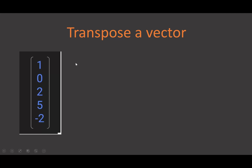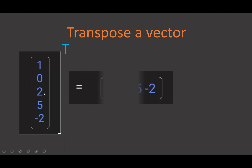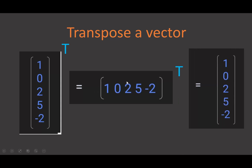Let's start with how we can transpose a vector. This is a column vector. In layman's terms, to transpose a vector we simply convert this column into a row — like that. So this is what we get after transposing the vector. If we want to obtain the original shape again, we just transpose this vector once more, and it retains the original shape.